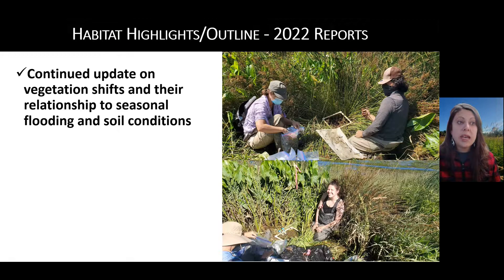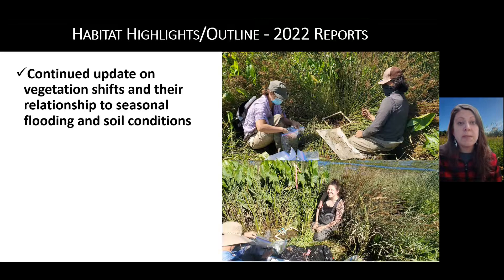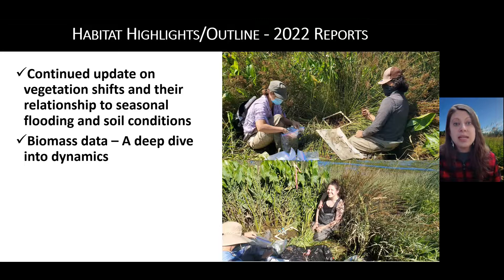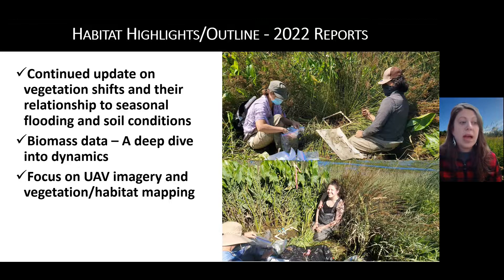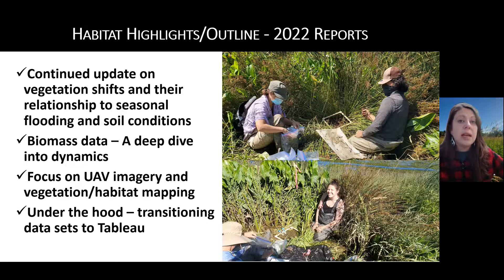Here's an outline of what I'm going to talk about today. I'm going to talk about trends we've seen in 2020 and 2021 looking at plant communities and their relationships with flooding. In the report, you'll also see a more in-depth analysis of soil conditions. We have the big biomass study looking at the details of detritus and compositions and contributions to the Columbia food web. I'm going to highlight some of the drone imagery analysis that we're doing, and that's a manuscript we're putting together.